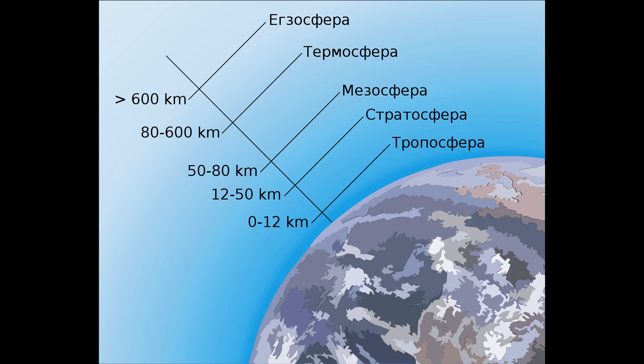And the upper boundary, the mesopause, is usually from 85 to 100 kilometers, 53 to 62 miles, 279,000 to 328,000 feet.